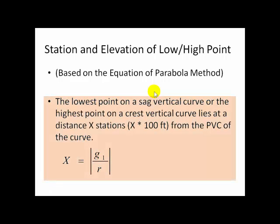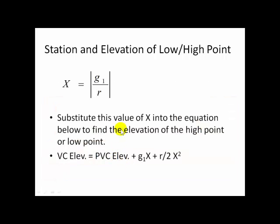The lowest point on a sag vertical curve or the highest point on a crest vertical curve lies at the distance of X stations. That is, X times 100 feet from the PVC of the curve. The inputs here are G1 and R. So, the absolute value of G1 divided by R is our value of X. We'll take this value of X and plug it into our vertical curve elevation equation to find the high point or the low point.